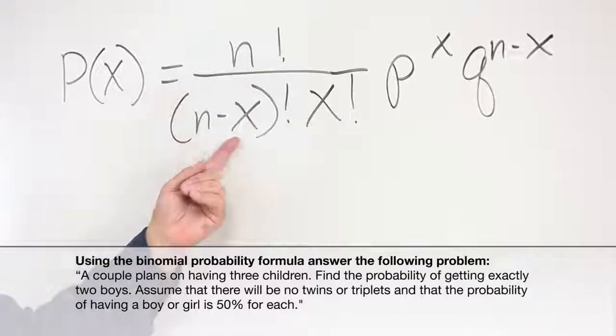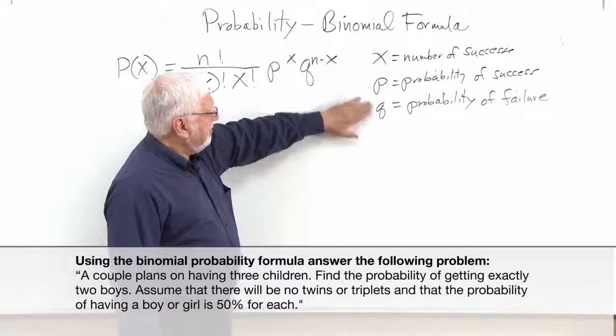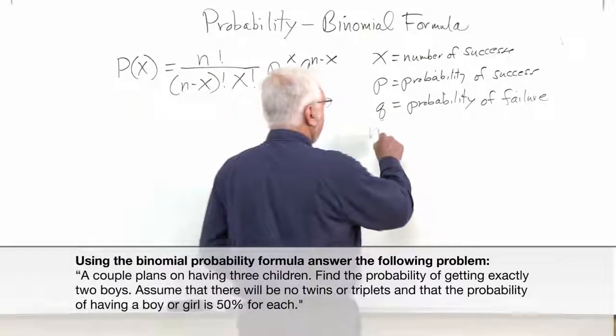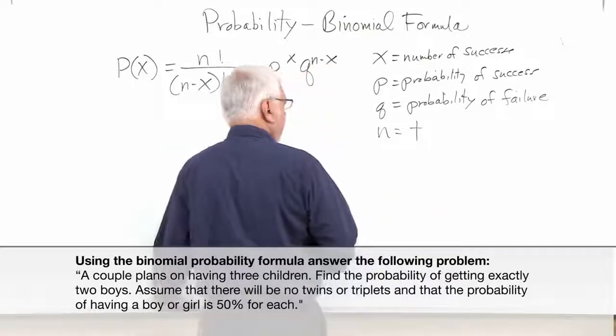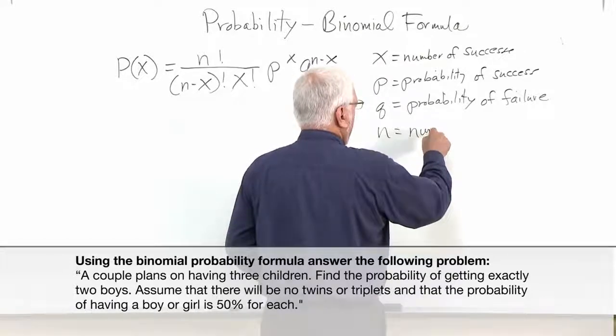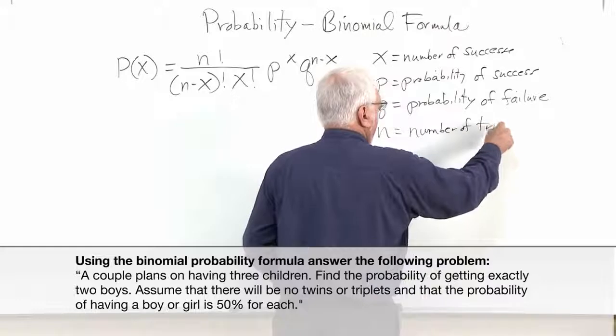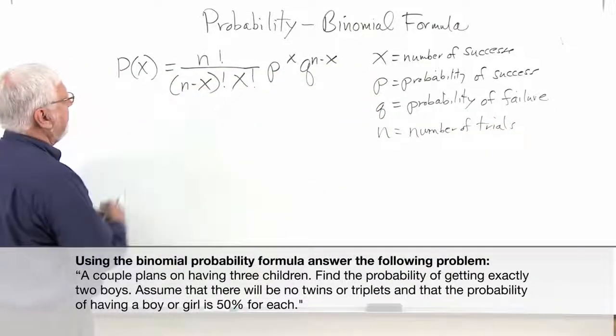The x, the n's, and the p's and the q's. Well I have the x and the p's and the q's over here, and the n is the number of trials. N is the number of trials. So we've got everything defined.